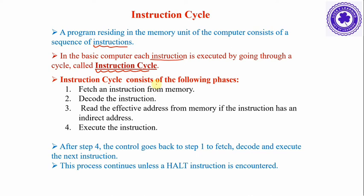The instruction cycle consists of the following four phases: fetch an instruction from memory; decode the instruction so that it is understood what type of instruction it is — whether it is a memory reference instruction, register reference instruction, or input-output instruction; read the effective address from memory if the instruction has an indirect address; and finally, execute the instruction.